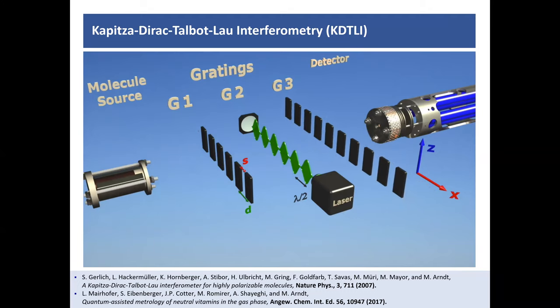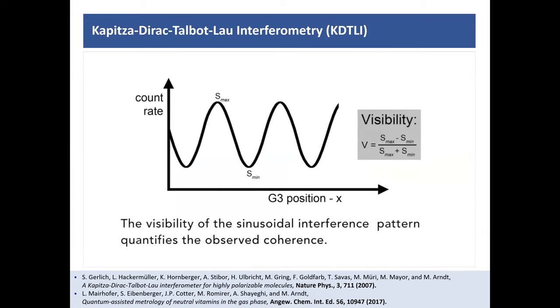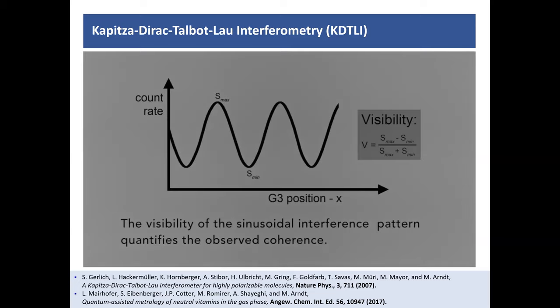What is transmitted behind the third grating, that is collected by a detector. In this case, it's a quadrupole mass spectrometer. But it can be other detectors as well. Typical phenomena that we then observe are these interference fringes, which are, well, usually in these cases sinusoidal. And the amplitude, the fringe modulation, that is the visibility, that is the signature of the quantumness of these interference patterns.